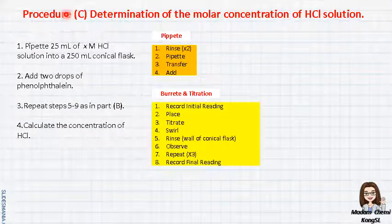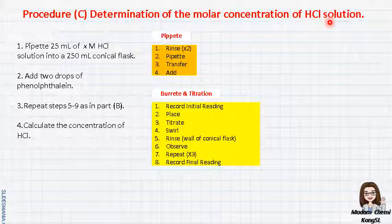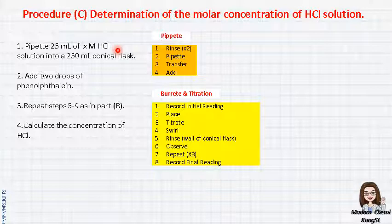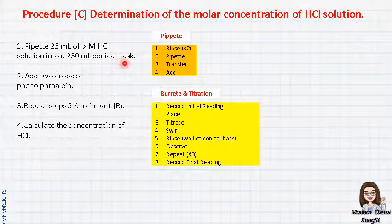Next, Procedure C: Determination of the molar concentration of your HCl hydrochloric acid solution. Compared to Parts A and B, Part C is much easier and is not related with A and B anymore. You just need to take roughly around 120 ml of HCl — 20 ml is for rinsing the pipette, and the remaining 100 ml you divide into four sets: gross, first, second, and third titration. So you pipette 25 ml four times and transfer into a 250 ml conical flask.